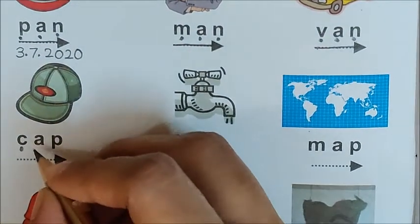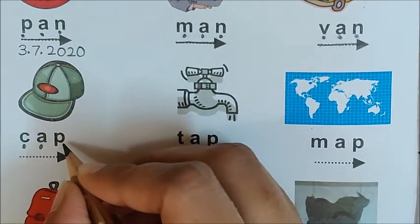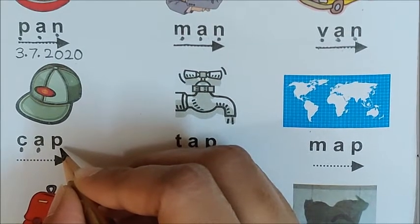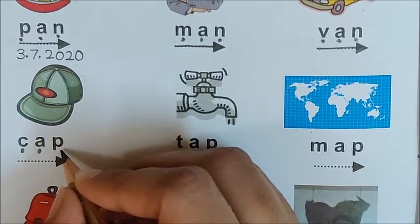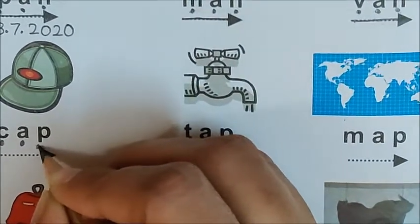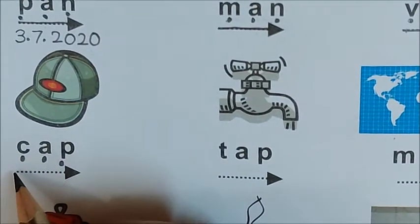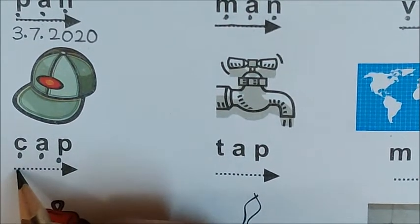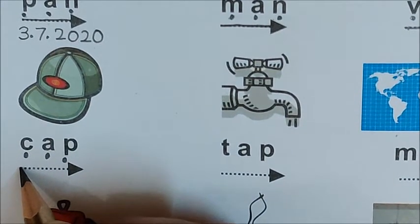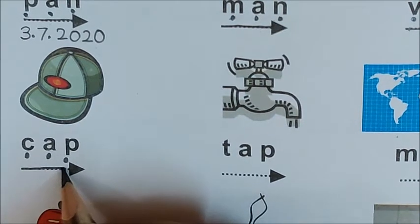So put one dot below app. What is the last sound children? P. P is the last sound. So put one dot below P. Now let us join all these sounds to make the word. You have to say when you are joining. K — a — p. Cap.